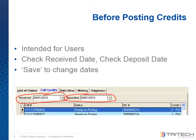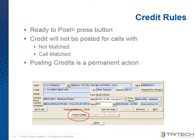A saved change to either of these dates will be recorded and reported in the remittance history. Once those two dates have been confirmed, simply press the post credits button to post all the ready for posting credits in the remittance. No credits will be posted for any claims that are in the not matched or call matched states.